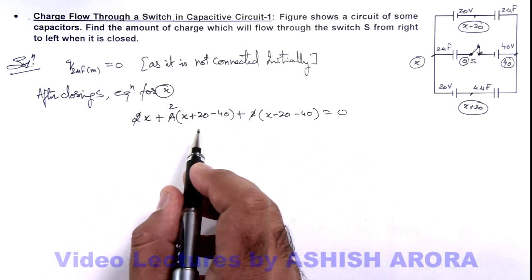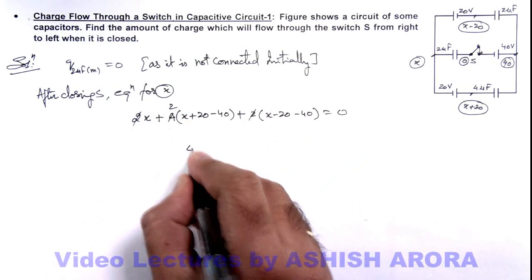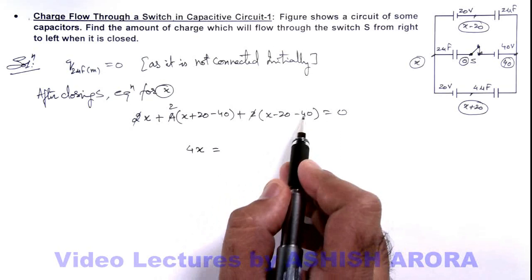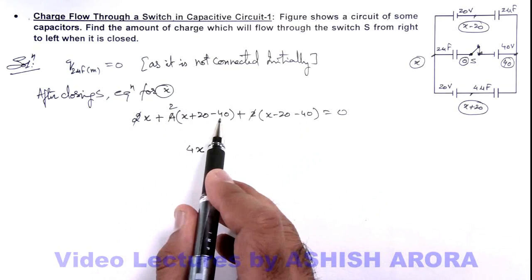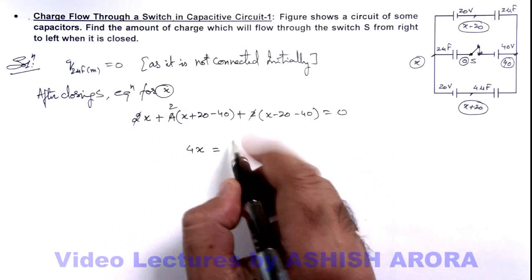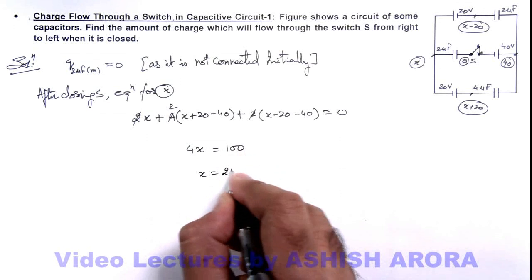On simplifying, here you can see we are getting 2 plus 1, 3 plus 1, so 4x is equal to—this will be 40, plus this is also, you can see, this minus 20 into 2 is minus 40 and this is minus 60, so this will be 100. So value of x we are getting is 100 by 4, this is 25 volts.